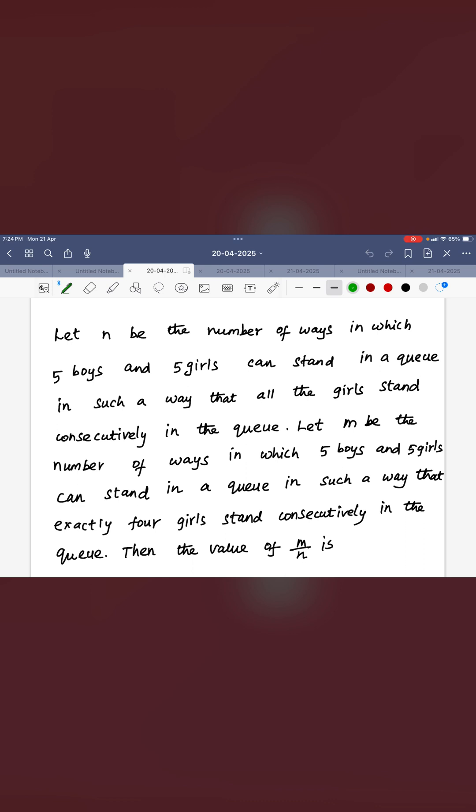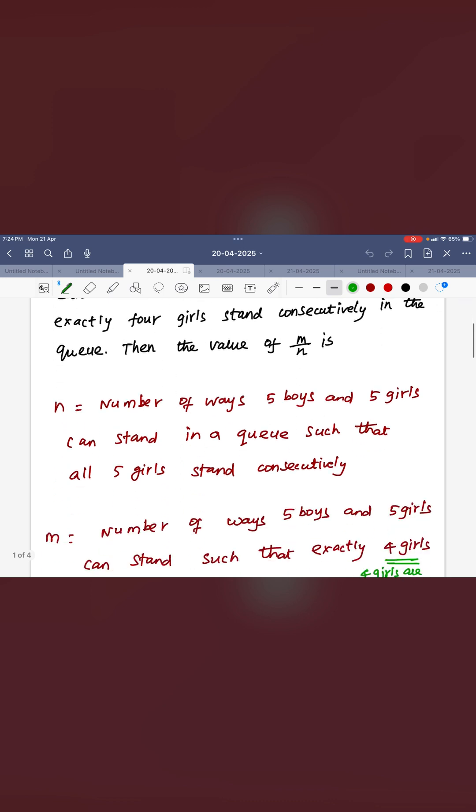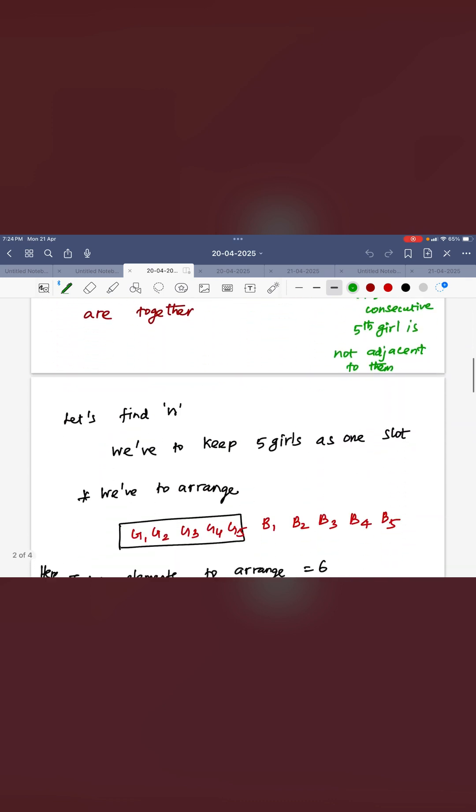Let N be the number of ways in which 5 boys and 5 girls can stand in a queue in such a way that all the girls stand consecutively in the queue. Let M be the number of ways in which 5 boys and 5 girls can stand in a queue in such a way that exactly 4 girls stand consecutively in the queue. Then the value of M by N. Then how to find out value of N here?